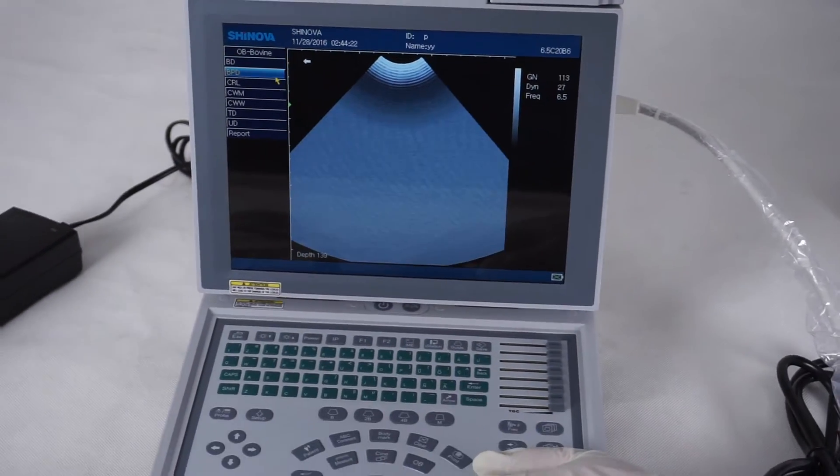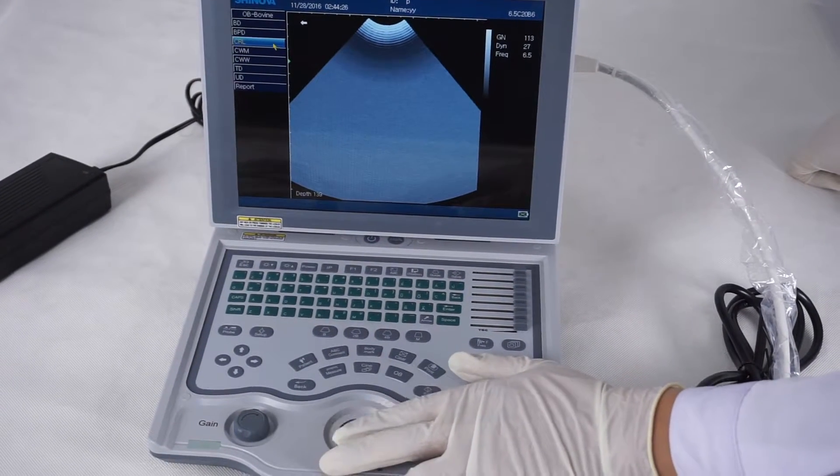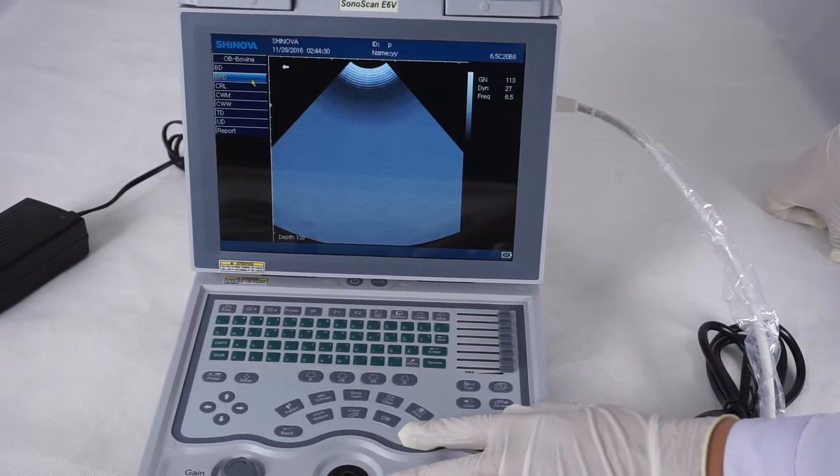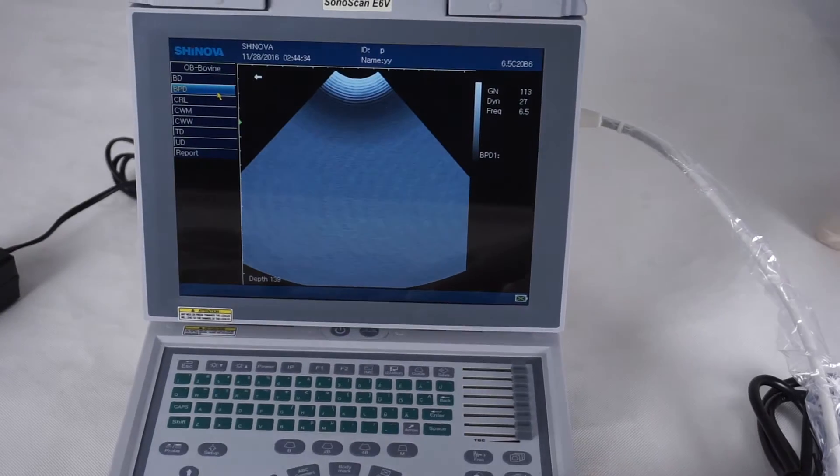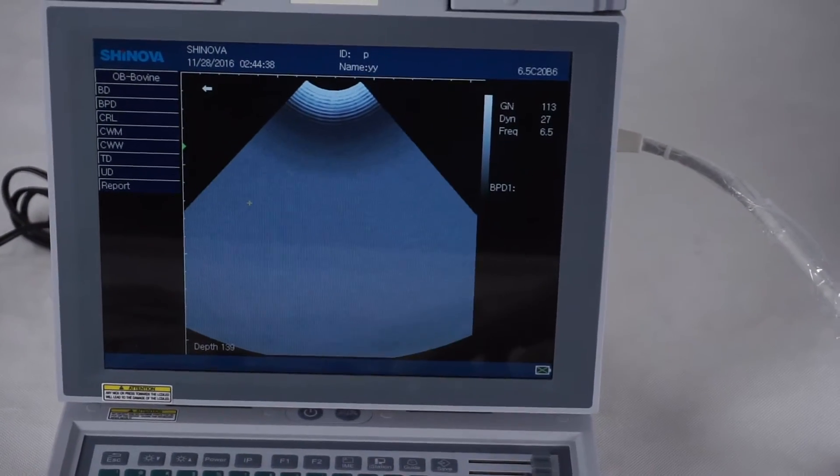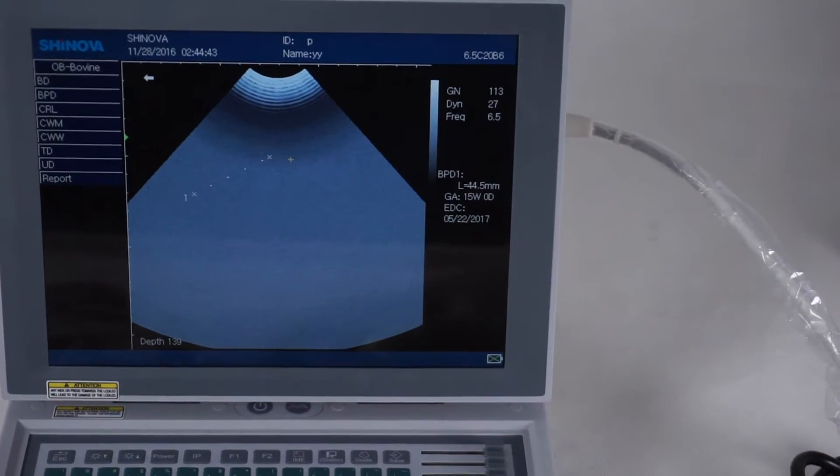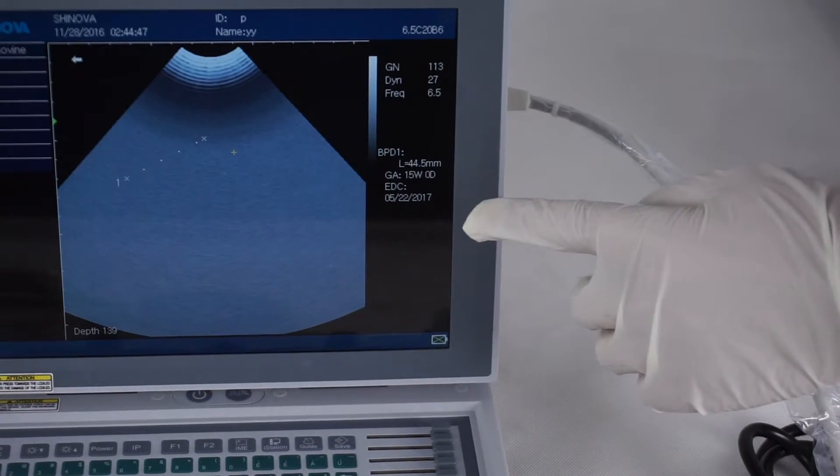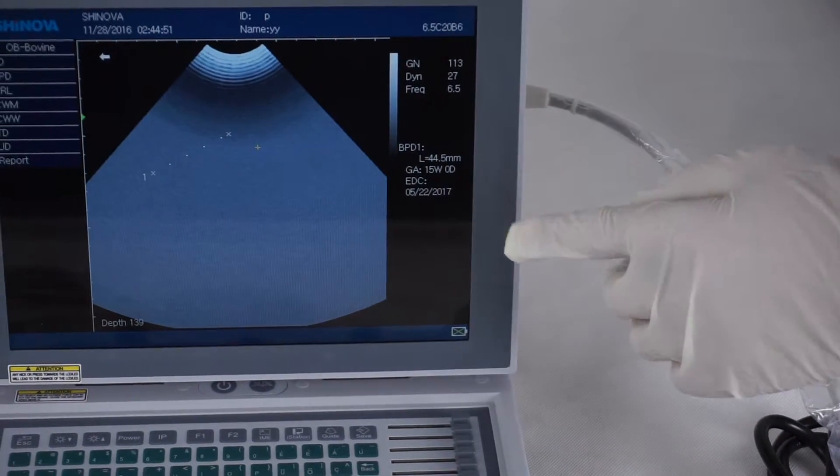And we take the test, make the test for BPD. When you set the distance, you can see the data on the right side: GA and EDC.